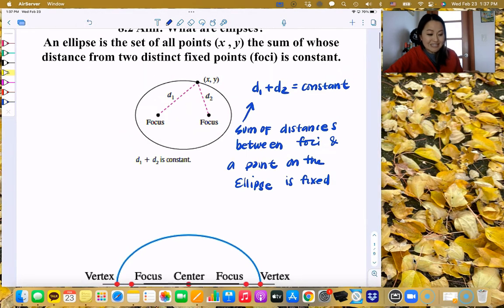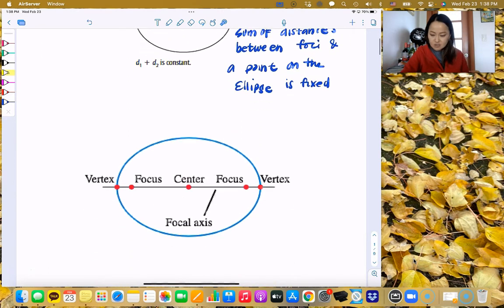Some of the distances between the foci and the point along the ellipse is fixed. And when we actually take that, all those points, a collection of points, then it's going to create an ellipse. Just like the parabola, it's probably not what you thought an ellipse was, but that's what it is. All right, let's move on.